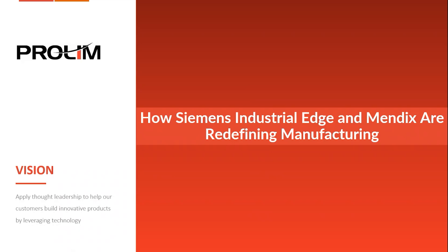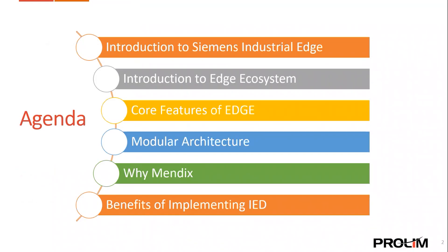Today's topic is how Siemens Industrial Edge and Mendix are redefining manufacturing. The agenda covers an introduction to Siemens Industrial Edge and its ecosystem, the features of Edge and its modular architecture, how Mendix helps in transforming applications in the Industrial Edge layer, and the benefits of implementing Industrial Edge devices.